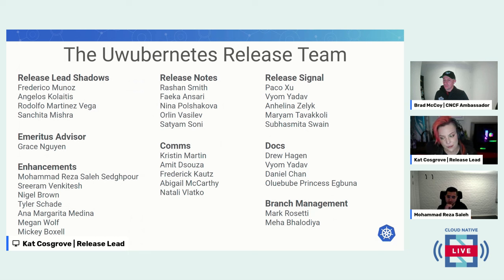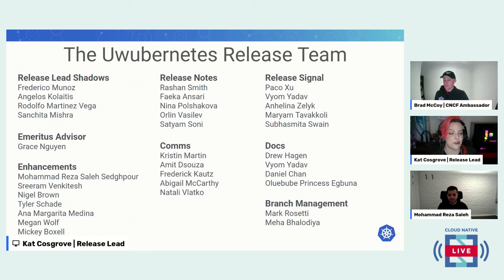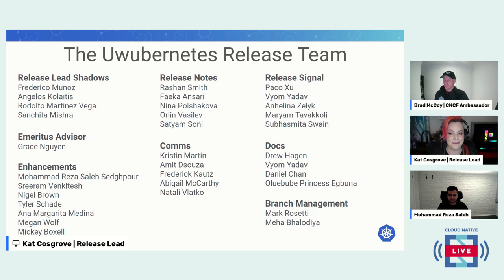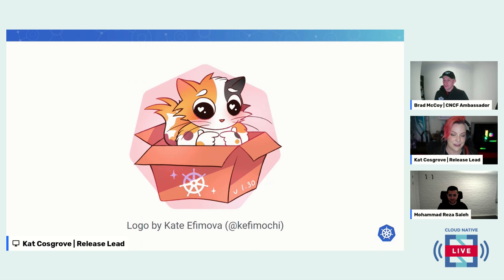In each of these sub-teams, the first person listed was the sub-team lead. Especially thank you to Muhammad, Kristen, Rishan, Paco, Viom, and Drew — we cannot do this without you. This was our cute logo. That is my cat, Espresso. She's 21 years old, and this logo was commissioned from Kate Ethamova, Kefi Mochi, on Twitter if you want to go check her out. Huge thanks to Kefi Mochi for the logo.